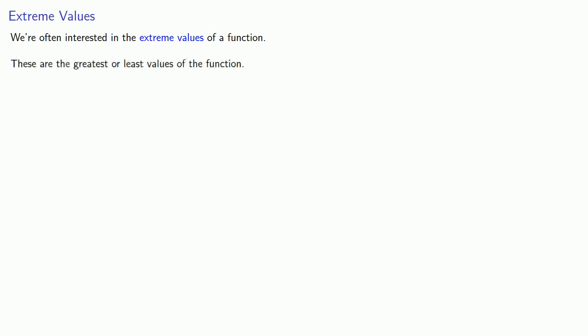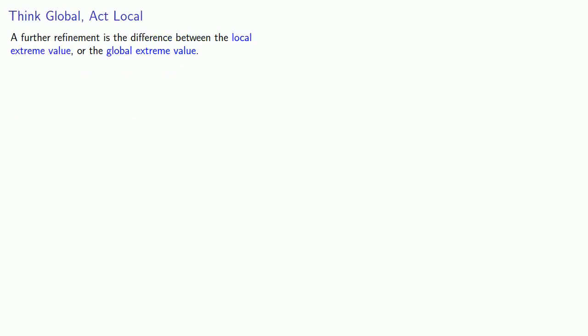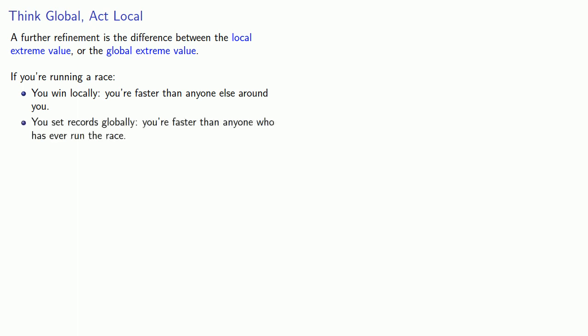Another thing we're often interested in is the extreme values of a function — the greatest or least values of the function. To find these from the graph of y equals f of x, we look for the greatest or least y values, since equals means replaceable. A further refinement is the difference between local and global extreme values. One way to think about this: if you're running a race, you win locally — you're faster than anyone around you. Meanwhile, you set records globally — you're faster than anyone who has ever run the race.